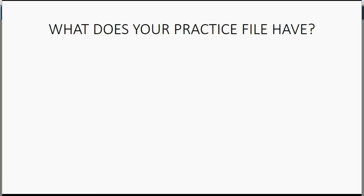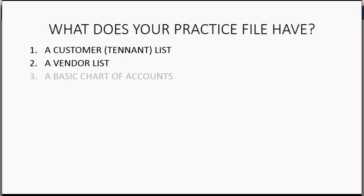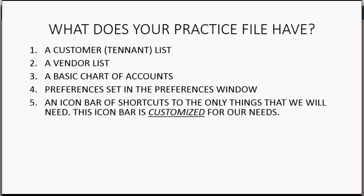The practice file that I have provided for you has everything you need. It has a customer list which I call the tenant list, a vendor list for businesses whom we have to pay for the services that the landlord needs to run the building, and a basic chart of accounts with common accounts that most businesses and landlords need. The preferences are already set in the preferences window — things like defaults and how the file will automatically behave — and an icon bar of shortcuts to only the things that we will need.